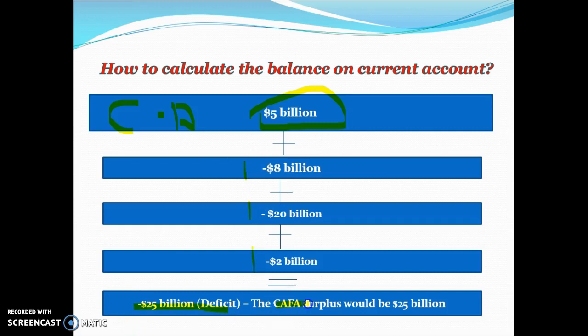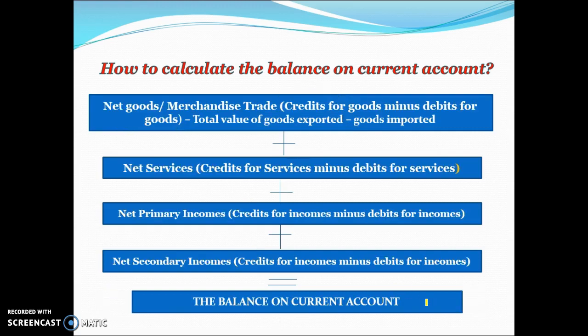This would mean the capital and financial account together are in surplus by $25 billion because they balance out. Again, you're adding up the total of credits minus debits for all sub-accounts — net goods, net services, net primary income and net secondary income — to get your balance on current account.